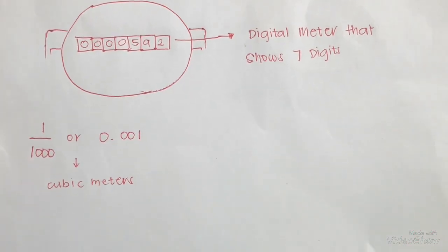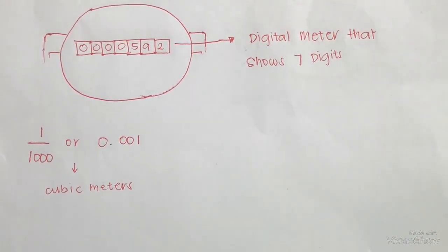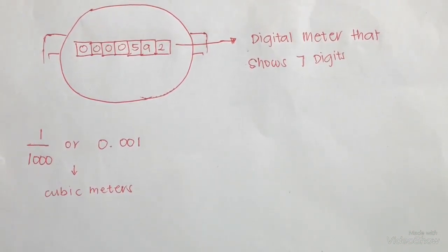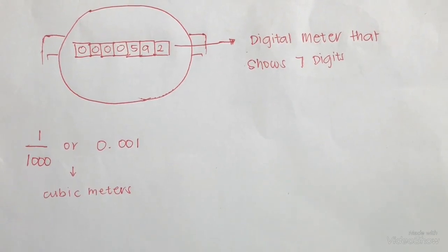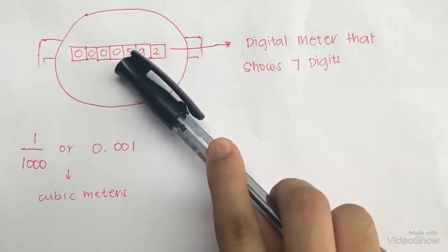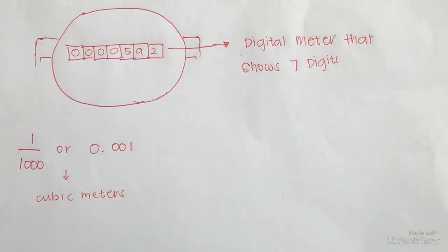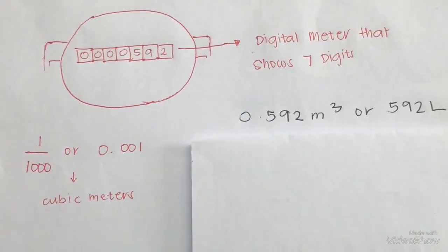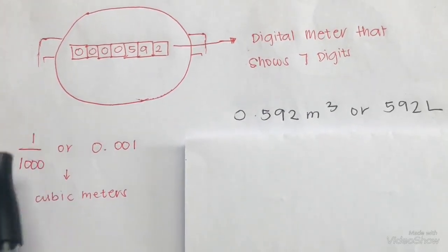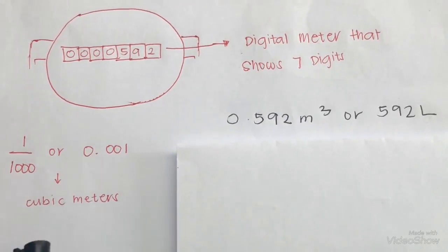Like electricity, the water consumed is also measured by a meter and is expressed in cubic meters. The water meter is not the same as the electric meter — it is a digital meter that shows seven digits. The last three digits at the right form the decimal or fractional part when measuring the amount of water consumed. To get the actual reading in cubic meters, multiply the number that appears by 1/1,000 or 0.001.